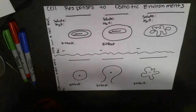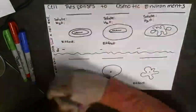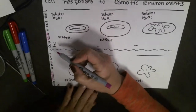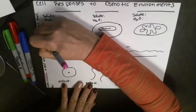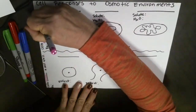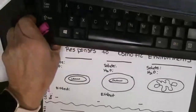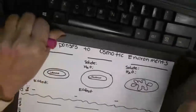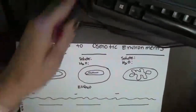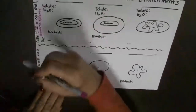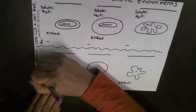We're going to be looking at cells with a cell wall — for example, bacteria and plants. And cells without a cell wall, such as animal cells, which of course includes us.